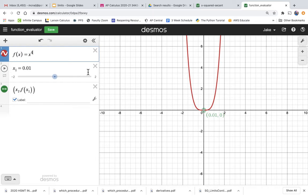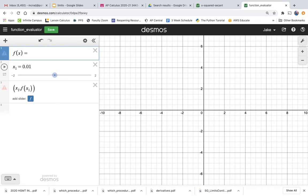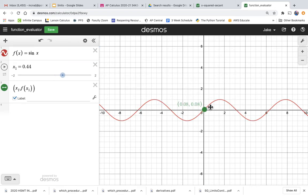Right, so what if I say f of x equals sine of x? Okay, now I'm evaluating the sine function. That's the beauty of this: it's just plotting x sub 1, f of x sub 1, which is referring to this function up here. So I can just change that function definition.